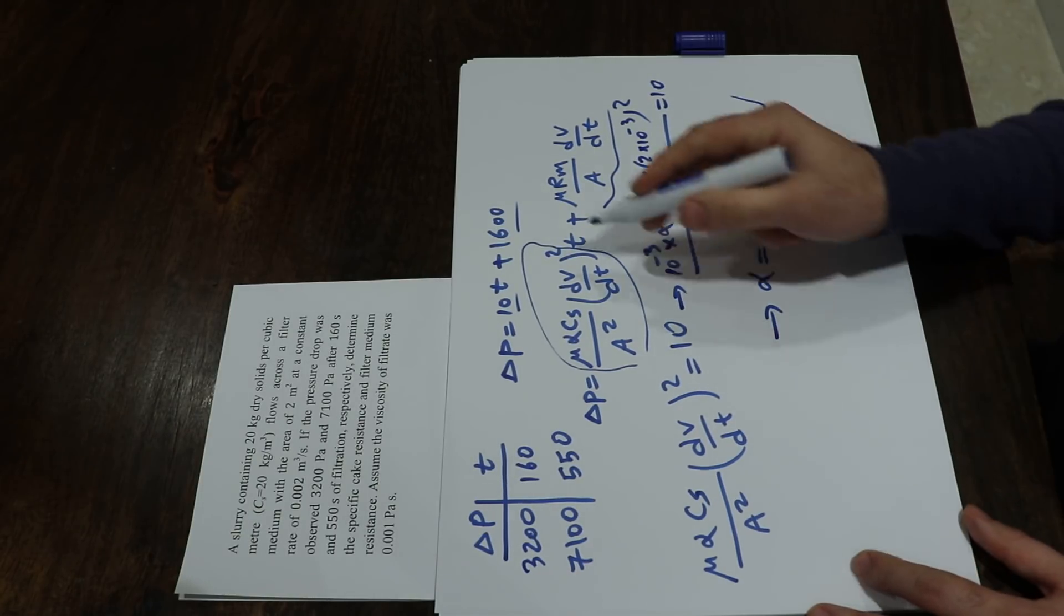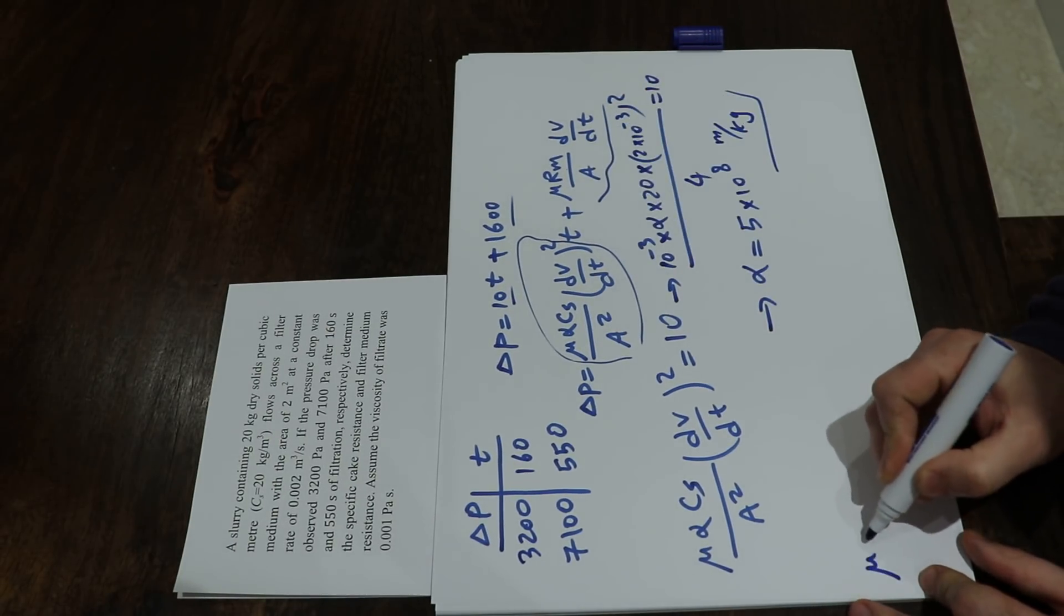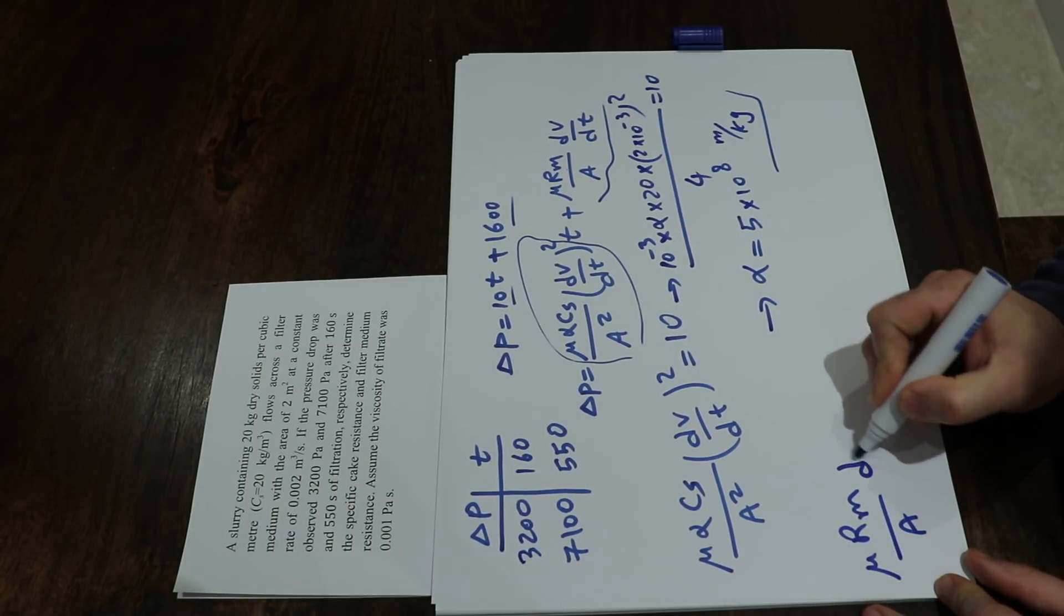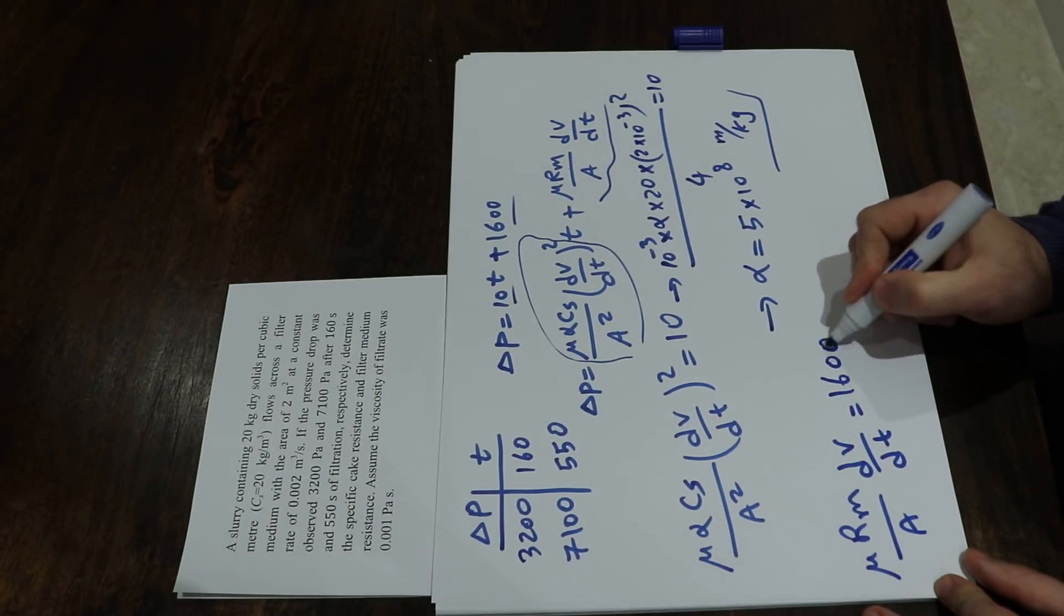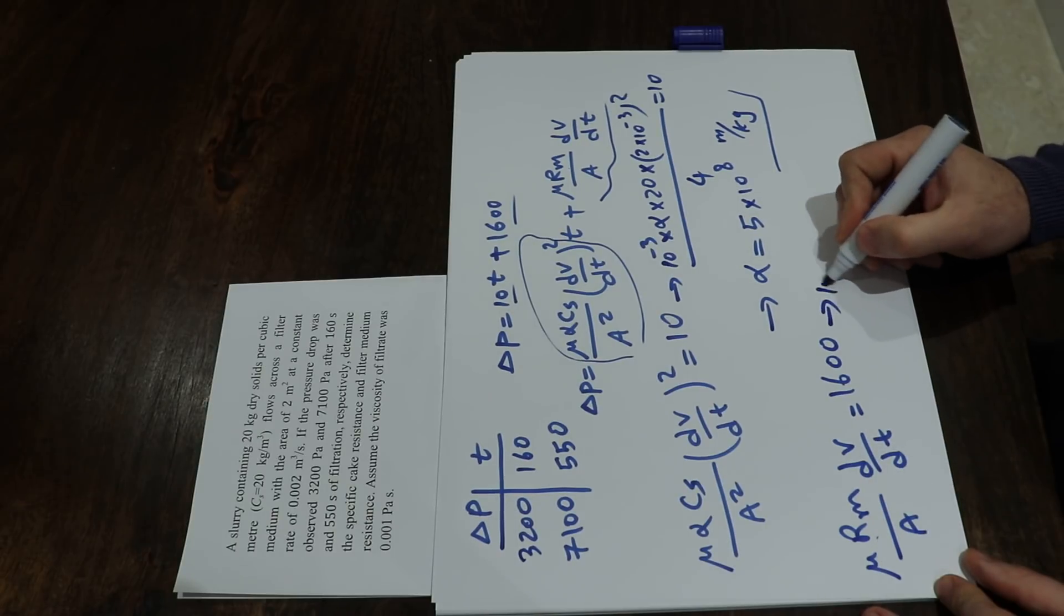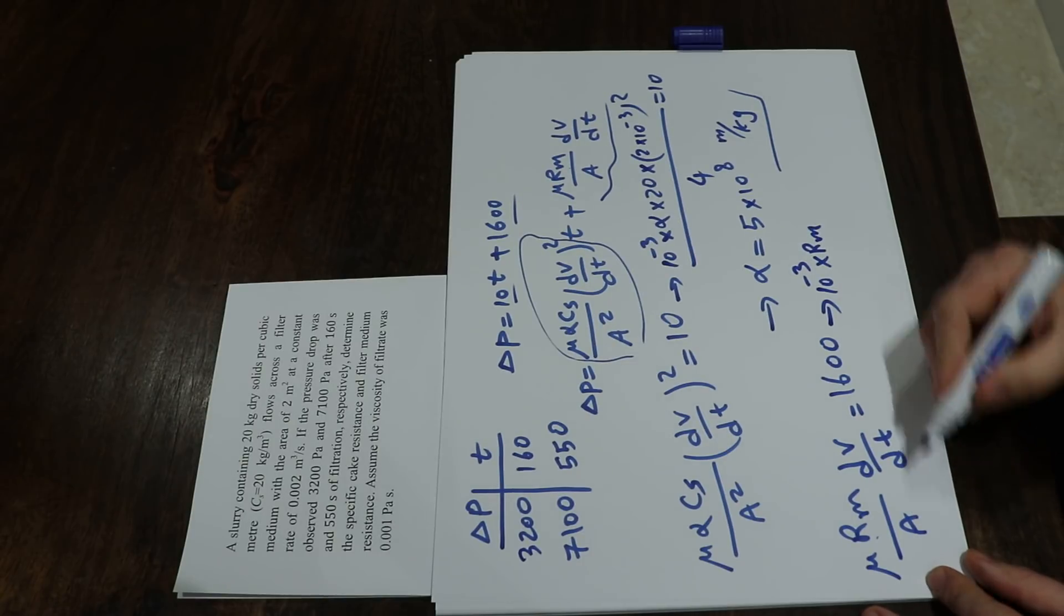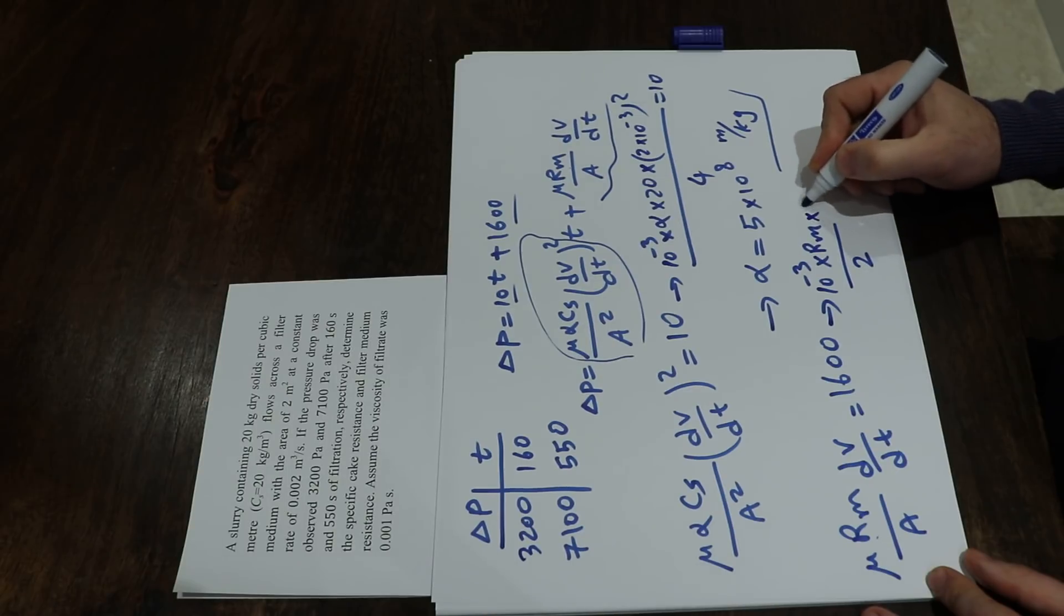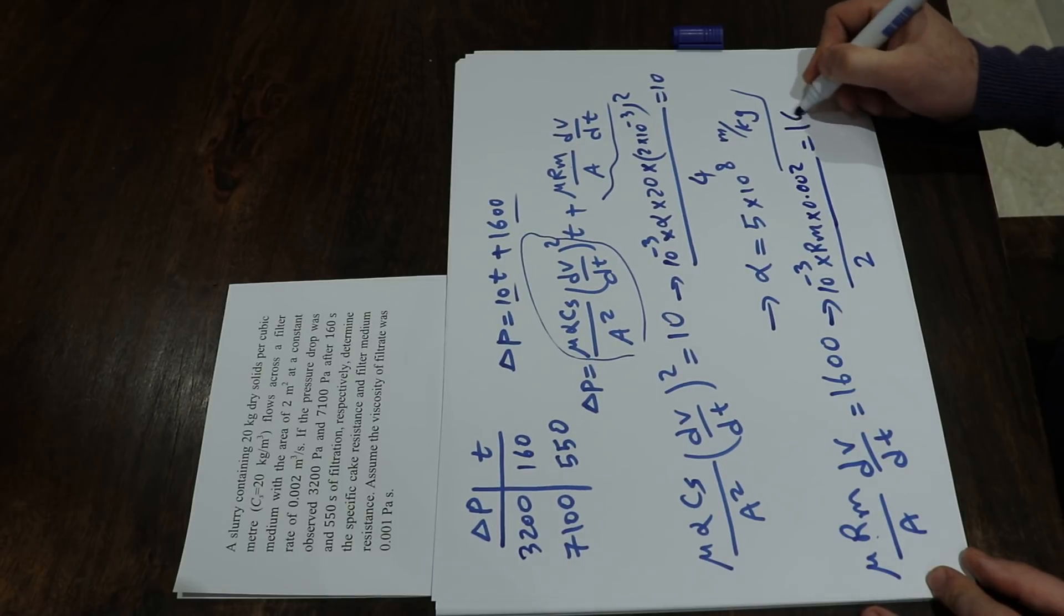You can do the same to calculate the Rm. So in other words, you can write mu Rm divided by A times dv over dt should be equal to 1600. Again, here you have all the parameters except Rm. So you basically put mu is 10 to the minus 3 times Rm, which is the unknown, divided by area that is 2, times dv over dt which is 0.002. That should be equal to 1600.